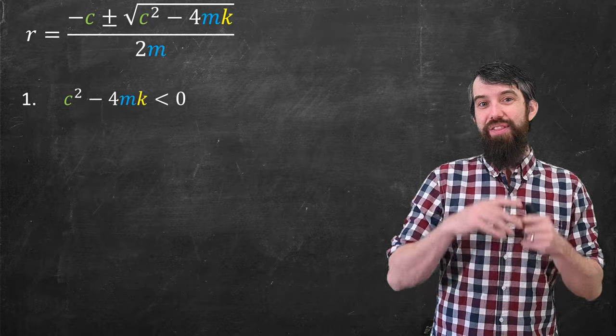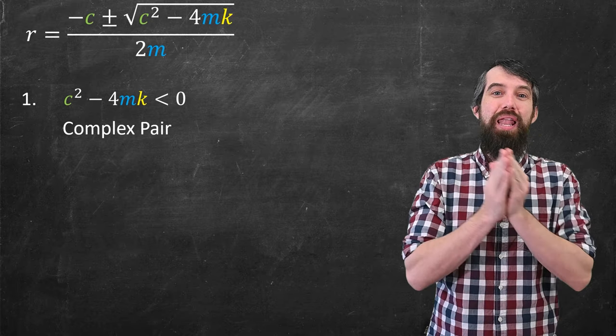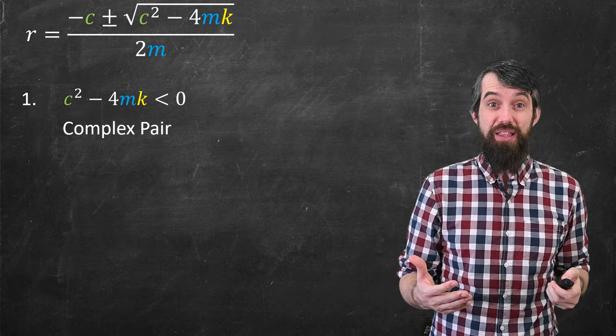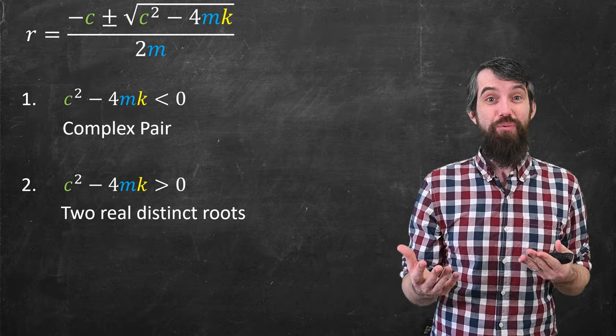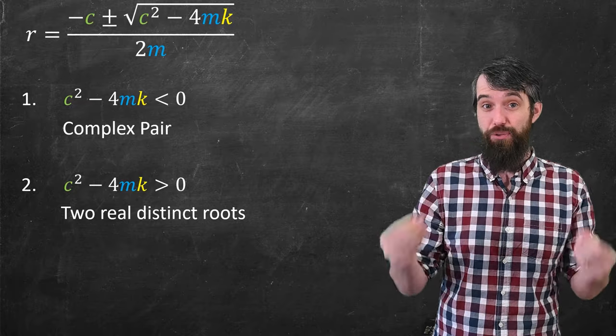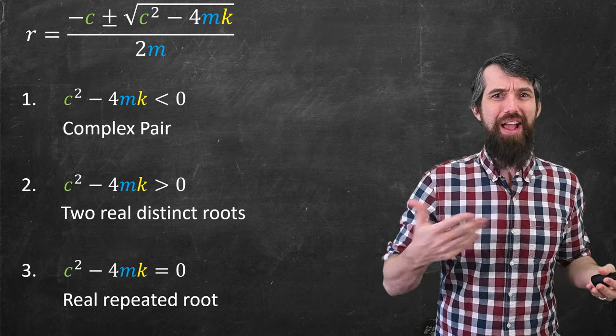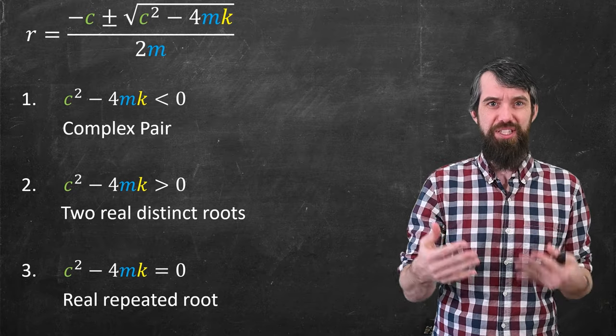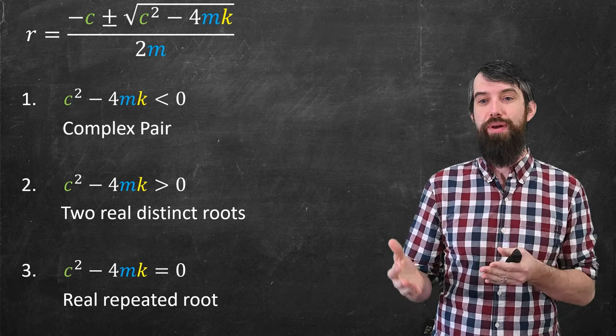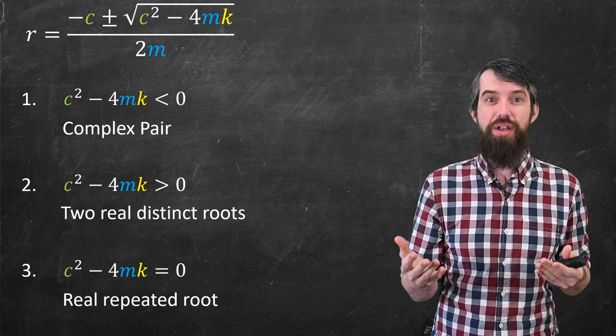Case one could be that the thing under the square root is negative. It's less than zero, in which case you'd have a complex pair of roots. The square root of a negative would be imaginary. The other case would be that the thing underneath the square root would be positive, in which case you'd have minus c over 2m plus something and minus something real. You'd get two real and distinct roots. And the third case would be that the thing under the square root was zero, in which case you'd get plus or minus zero. You'd just get the same root with multiplicity 2. We call that a real repeated root.